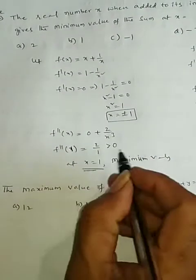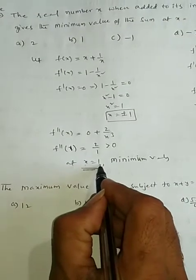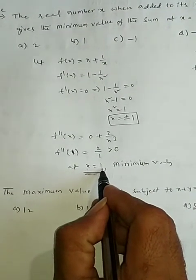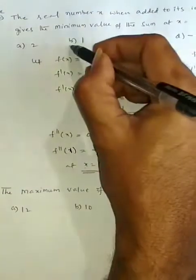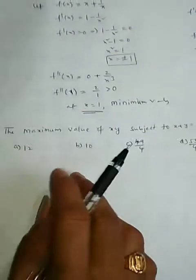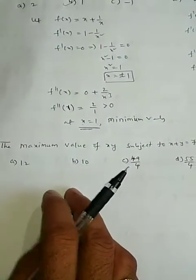Therefore, the answer is x equal to 1 is the right option — option B is the right one. Based on maxima and minima, here also I have one more JEE means question.